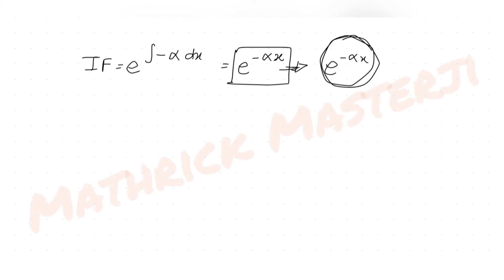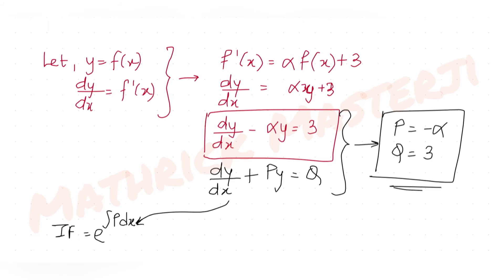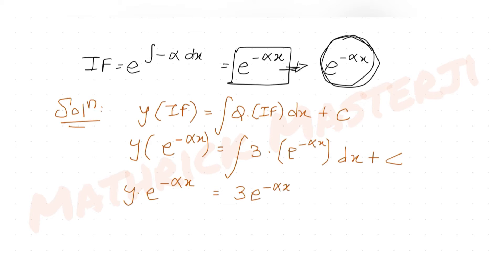The general solution is y · IF = ∫Q · IF dx + C. Substituting, y · e^(−αx) = ∫3 · e^(−αx) dx + C, which gives y · e^(−αx) = 3 · e^(−αx) / (−α) + C.